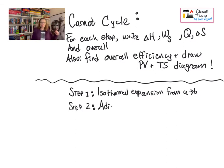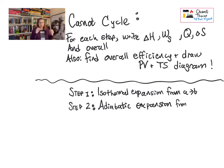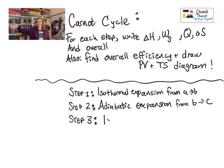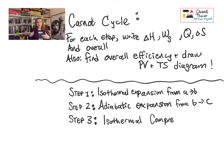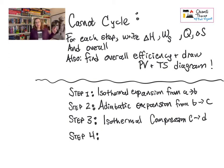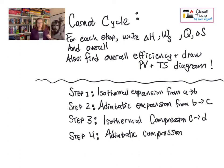Step one is isothermal expansion from state A to state B. Step two, we take that same process stream and adiabatically expand it — so two expansion steps in a row — from state B to state C. Step three, we take state C and isothermally compress to state D. And then step four is an adiabatic compression — so two expansion steps, two compression steps — taking us from state D all the way back around to state A.